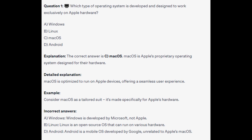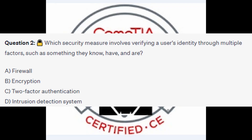Question number two: Which security measure involves verifying a user's identity through multiple factors such as something they know, have, and are? Is it A) Firewall, B) Encryption, C) Two-factor authentication, or D) Intrusion detection system? You now have five seconds.